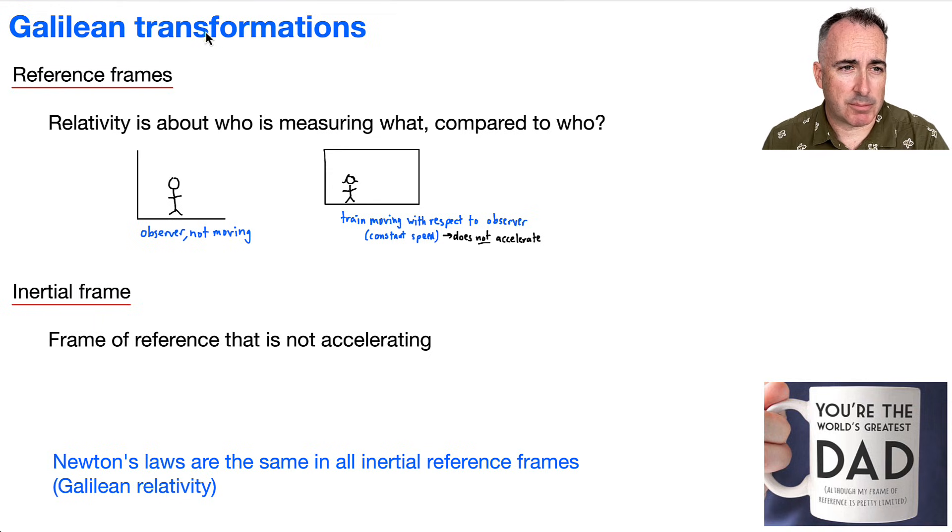So let's start by just talking about a reference frame. Because relativity, it's all about who's measuring what. And the reason it's called relativity is because everything's relative to someone else. For example, who is measuring what compared to whom? We might have this reference frame right here where the observer is not moving, and we typically call this reference frame S, like a regular reference frame.